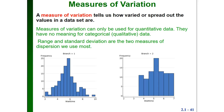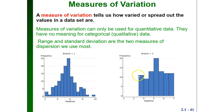Here are two histograms for different data sets, and we can compare the variation in these two data sets just by looking at the histogram. For the data set on the right, branch number two, the data values seem to be much closer together. If we look at the possible range, it would only go from three and a half as the minimum up to seven as the maximum possible data value.